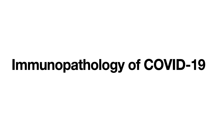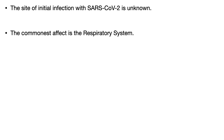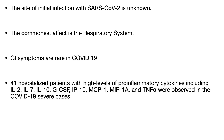What is the immunopathology of COVID-19? The site of initial infection of SARS-CoV-2 is still unknown. The most commonly affected system is the respiratory system because of the predominance of ACE2 receptors in the epithelial lining. Though the GI tract also has a high concentration of ACE2 receptors, GI symptoms — more common in SARS — are very rare in COVID-19. In one study of 41 hospitalized patients, very high levels of pro-inflammatory cytokines were observed in severe cases.